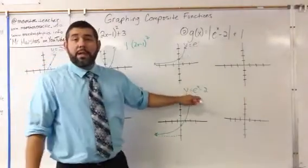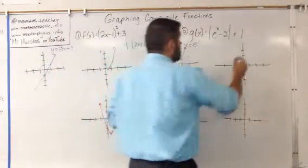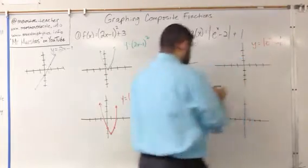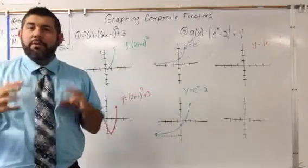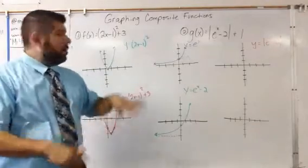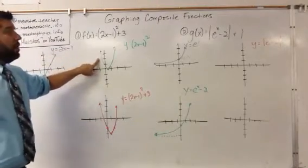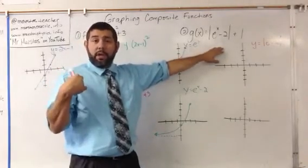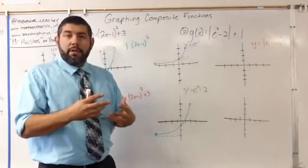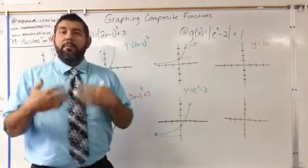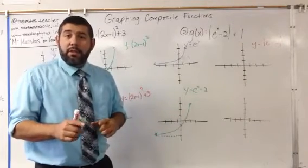Now that we have e to the x minus 2, we want to apply the absolute value to that. Something to remember: what the absolute value does is take all values that were negative and make them positive, but it doesn't change the curvature of the function at all. When we squared earlier, it changed the graph from linear to curved, but the absolute value does not change the curvature — if it were linear it stays linear. Since we have a curve, the slope of the curve stays the same; only now everything is made positive. Anything below the x-axis is going to be reflected above the x-axis, including the asymptote.